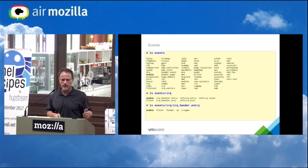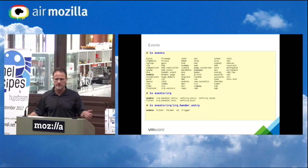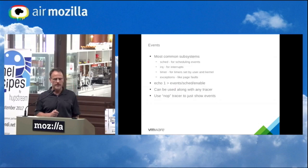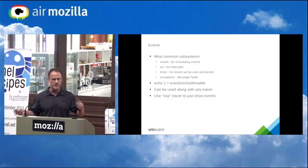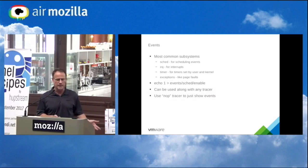You can enable and disable events by system, by individual event, or all at once. Looking in the IRQ subsystem, you can see irq_entry, irq_exit, softirq events — when soft IRQs are raised and when they execute. The most common subsystems you'll use when exploring are scheduler events (seeing when tasks are scheduled in and out), interrupts, timers, and exceptions — like what actually page-faulted, not just that a page fault happened.